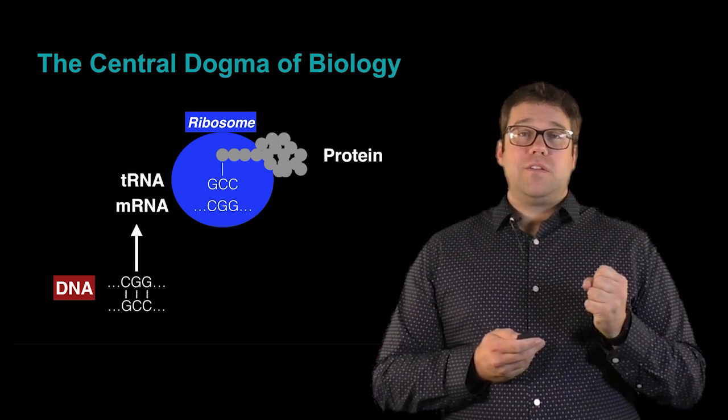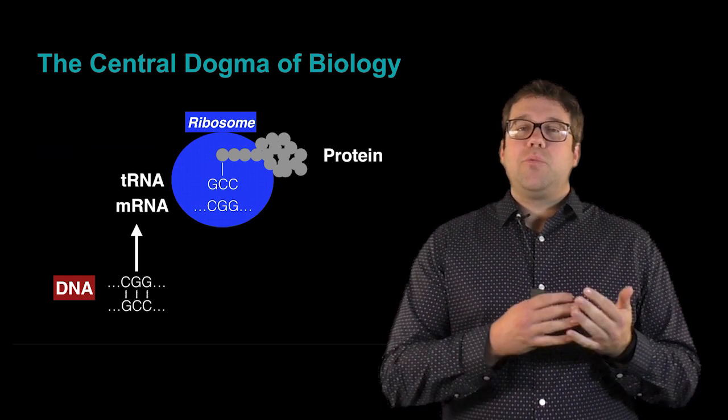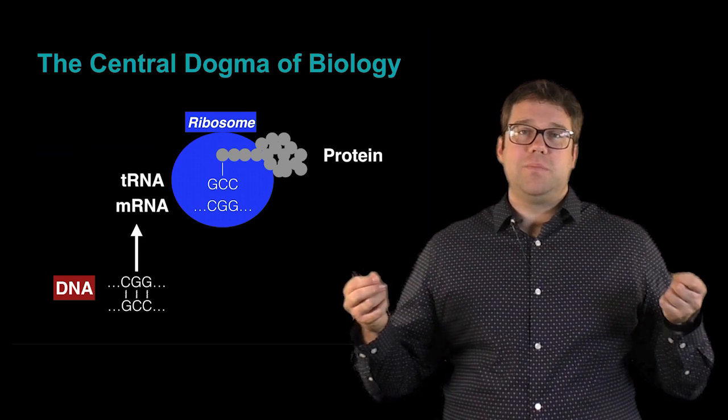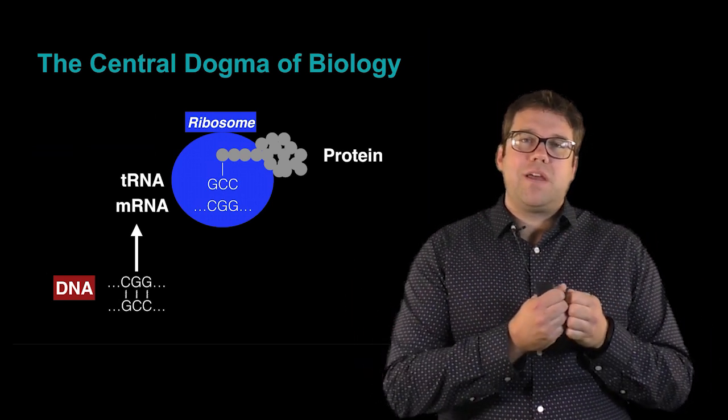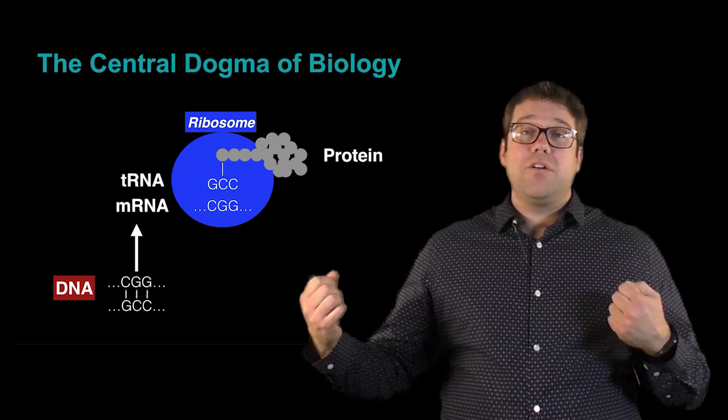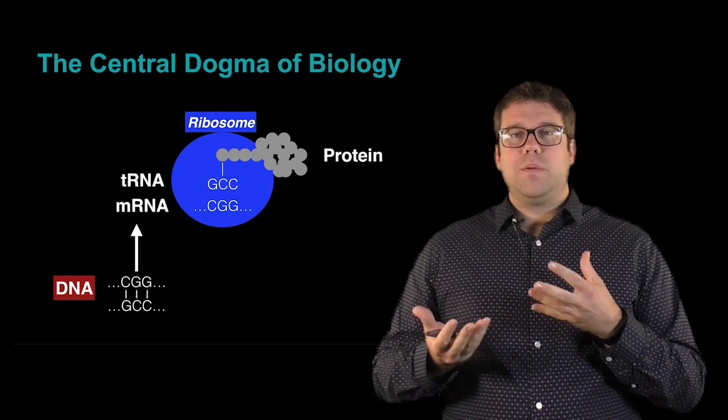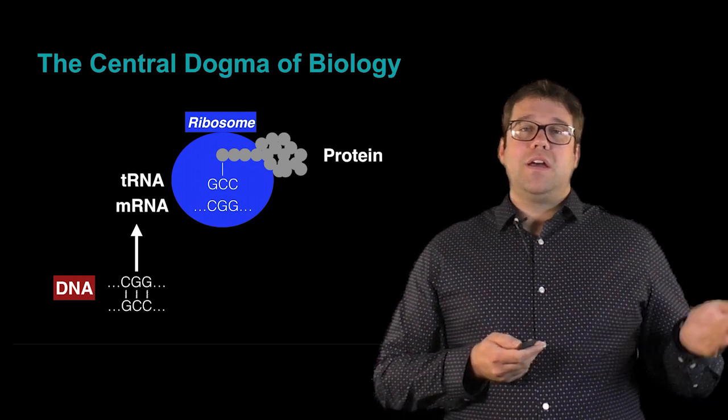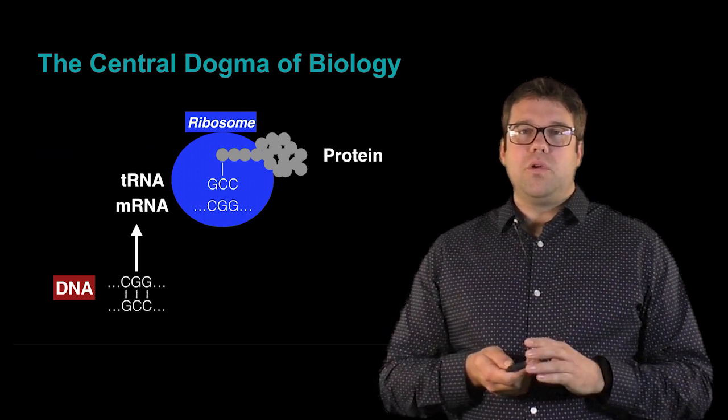When that amino acid is locked into the ribosome, it is polymerized into a growing chain of attached amino acids. And as that amino acid chain comes out of the ribosome, it starts to fold up into a functional protein. And so this is the entire process from going from DNA to a functional protein.